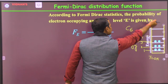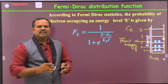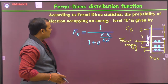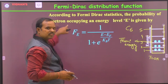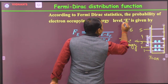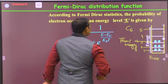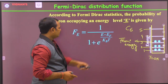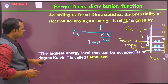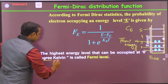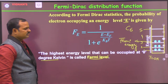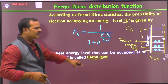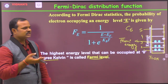Above the Fermi energy level, there may be many more energy levels, but all of them are empty — they are not filled by any electrons because the electrons are complete below it. The Fermi energy level has several definitions, and you will see more definitions as we go on. This is one definition: the highest occupied energy level at 0 Kelvin is called the Fermi energy level.